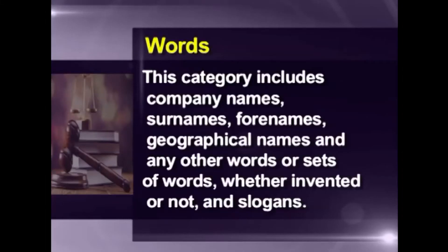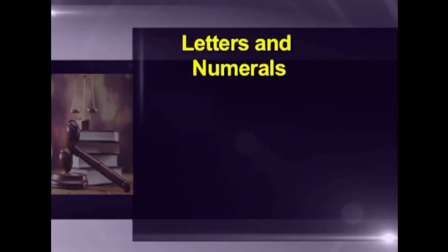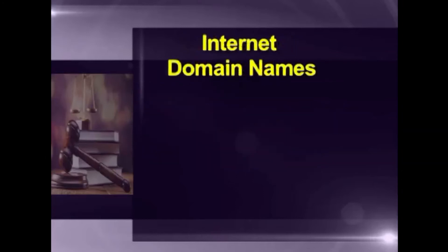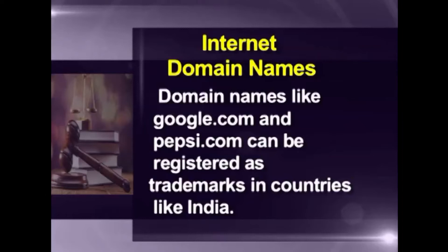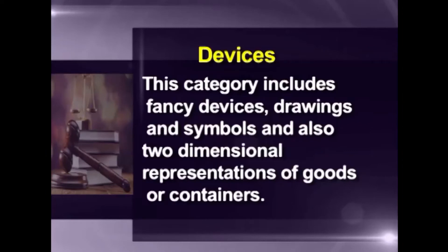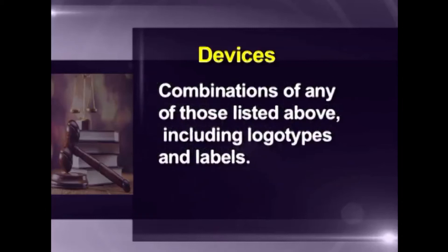The following types and categories of signs can be imagined. Words: this category includes company names, surnames, forenames, geographical names and any other words or sets of words, whether invented or not, and slogans. Letters and numerals: examples are one or more letters, one or more numerals or any combinations thereof. Internet domain names: domain names like google.com and pepsi.com can be registered as trademarks in countries like India. Devices: this category includes fancy devices, drawings and symbols and also two-dimensional representations of goods or containers. Combinations of any of those listed above, including logotypes and labels.